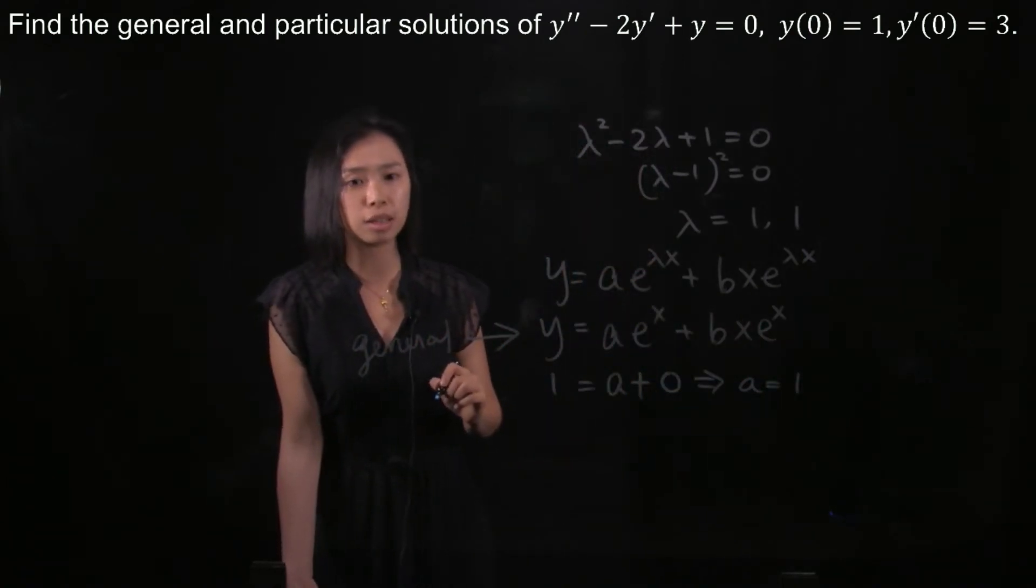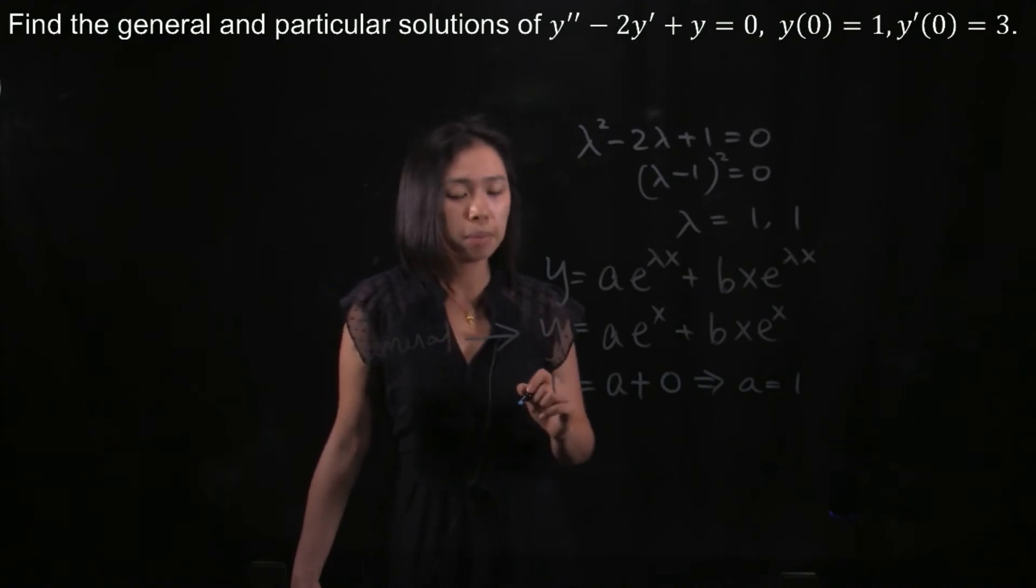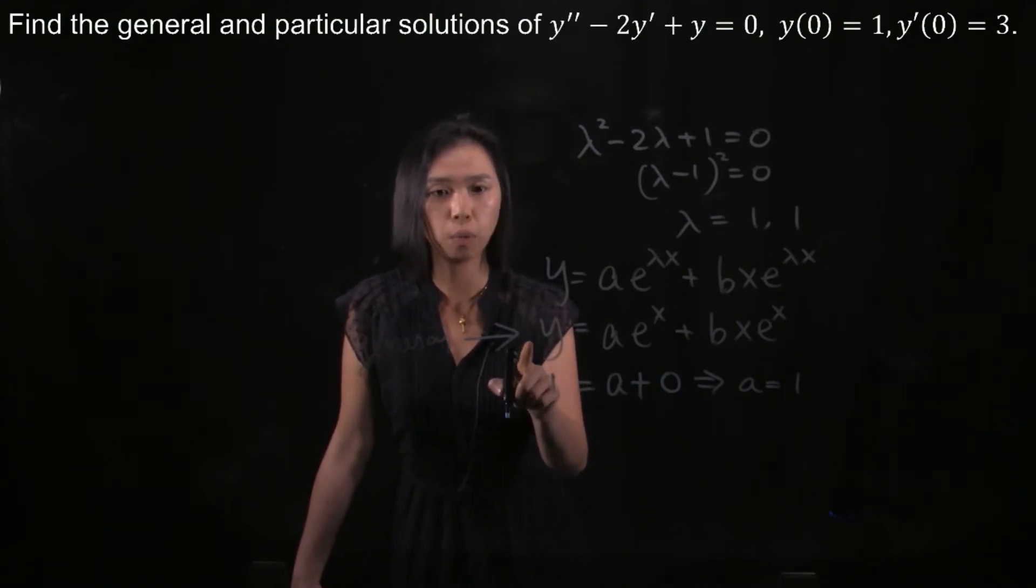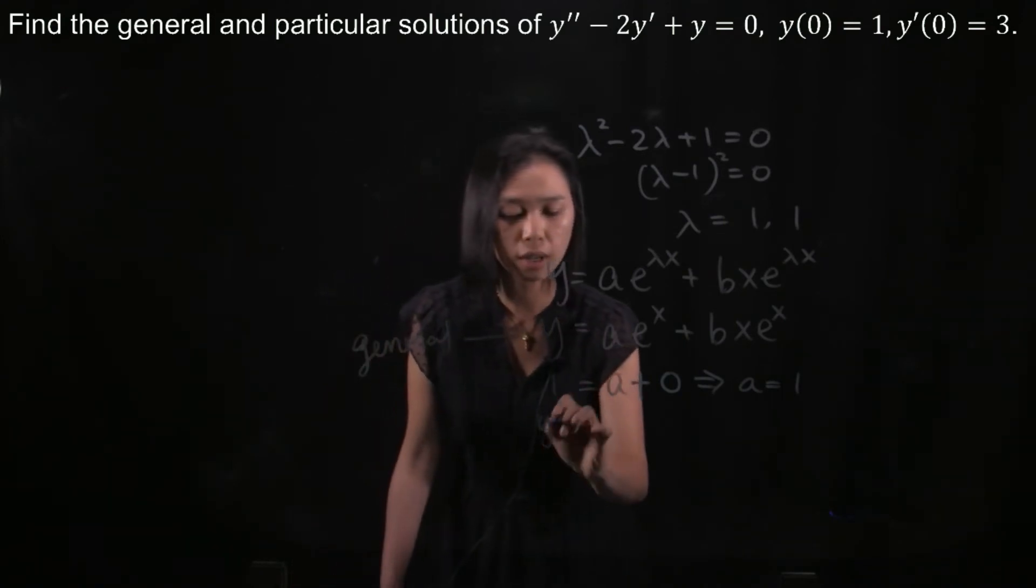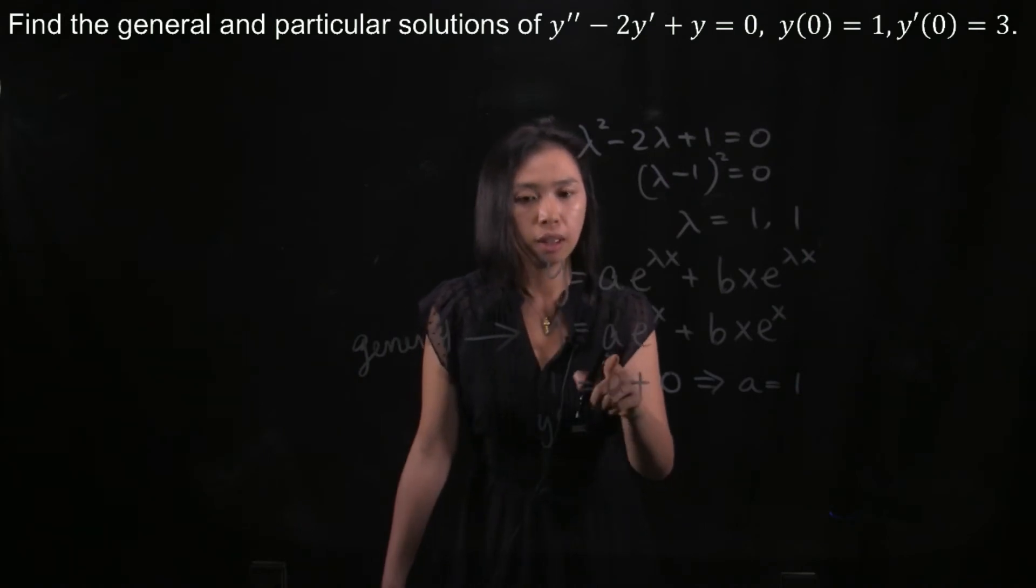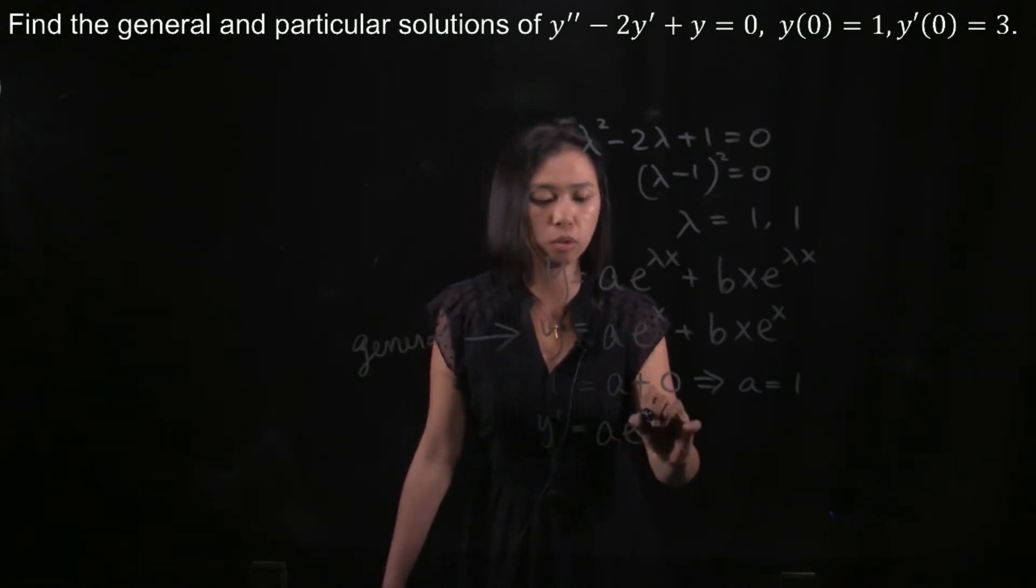And then the second condition is that y'(0) is 3, meaning that we have to differentiate this y one time. So we differentiate it. And then a is a constant, so a e^x when you differentiate it is still the same.